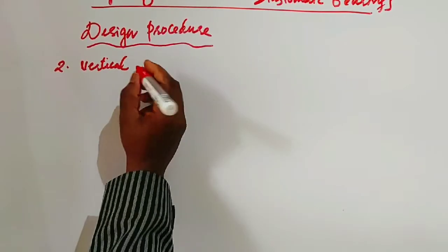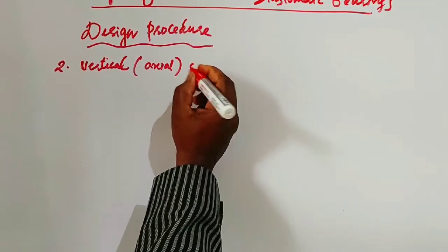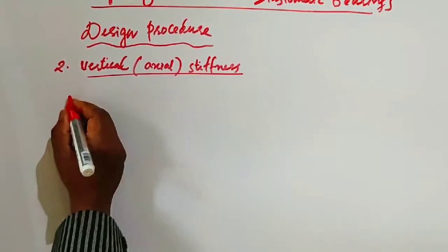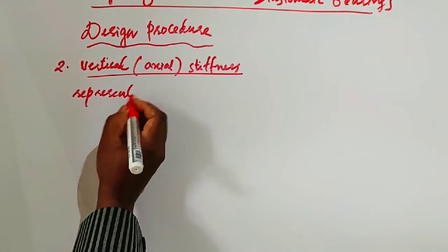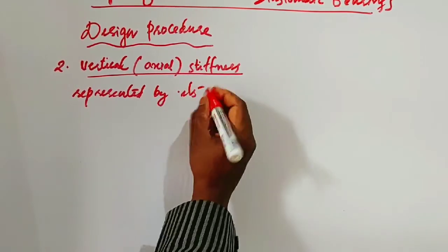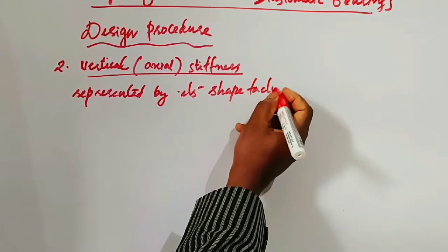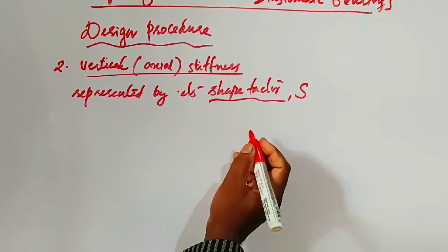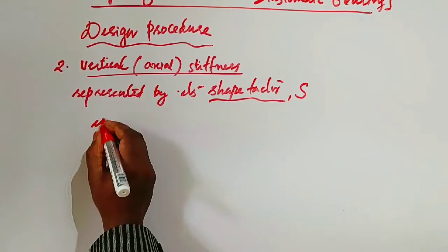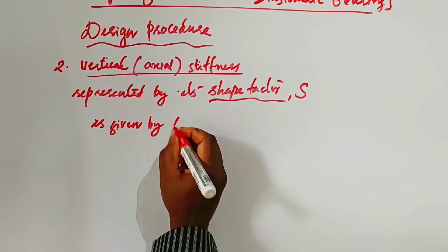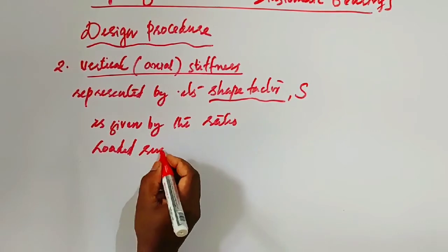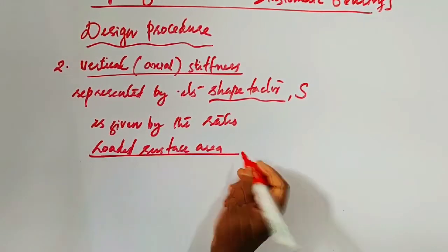Vertical stiffness or axial stiffness. The vertical or axial stiffness of the elastomer is represented by its shape factor. The shape factor is denoted by capital S. The shape factor of the elastomer is given by the ratio: loaded surface area divided by surface area free to bulk.